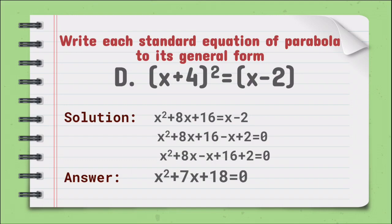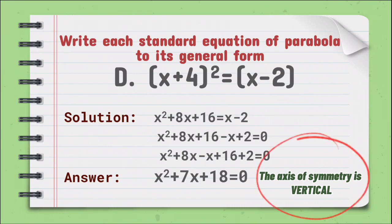Looking at this equation, we can see it is an example of the general form of a parabola with equation ax squared plus cx plus dy plus e equals 0. The value of a is 1 and the value of d is not equal to 0. So the axis of symmetry is vertical.